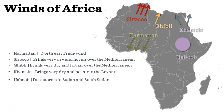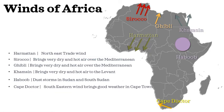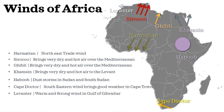Haboobs are large sandstorms in Sudan and South Sudan that do not have a predominant wind direction. The Cape Doctor is a strong, dry south-easterly wind in South Africa that brings very good weather to Cape Town. The Levante is a strong, warm easterly wind through the Strait of Gibraltar that can cause fog, cloud development, and even heavy showers in the area.